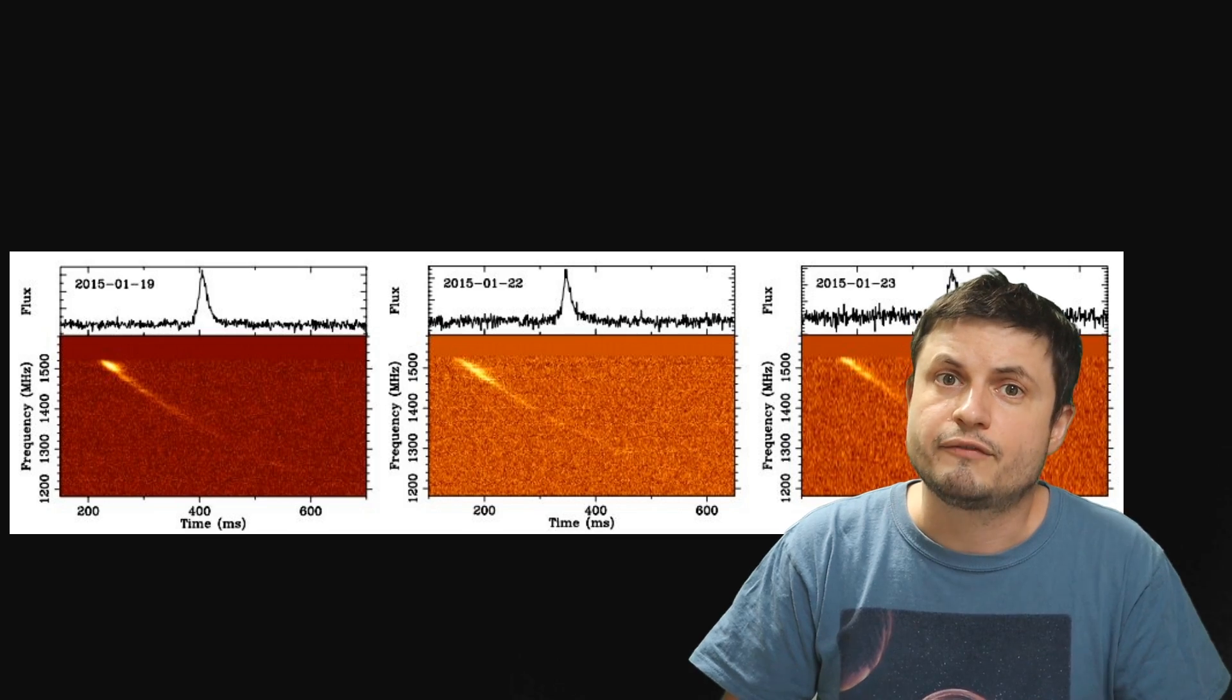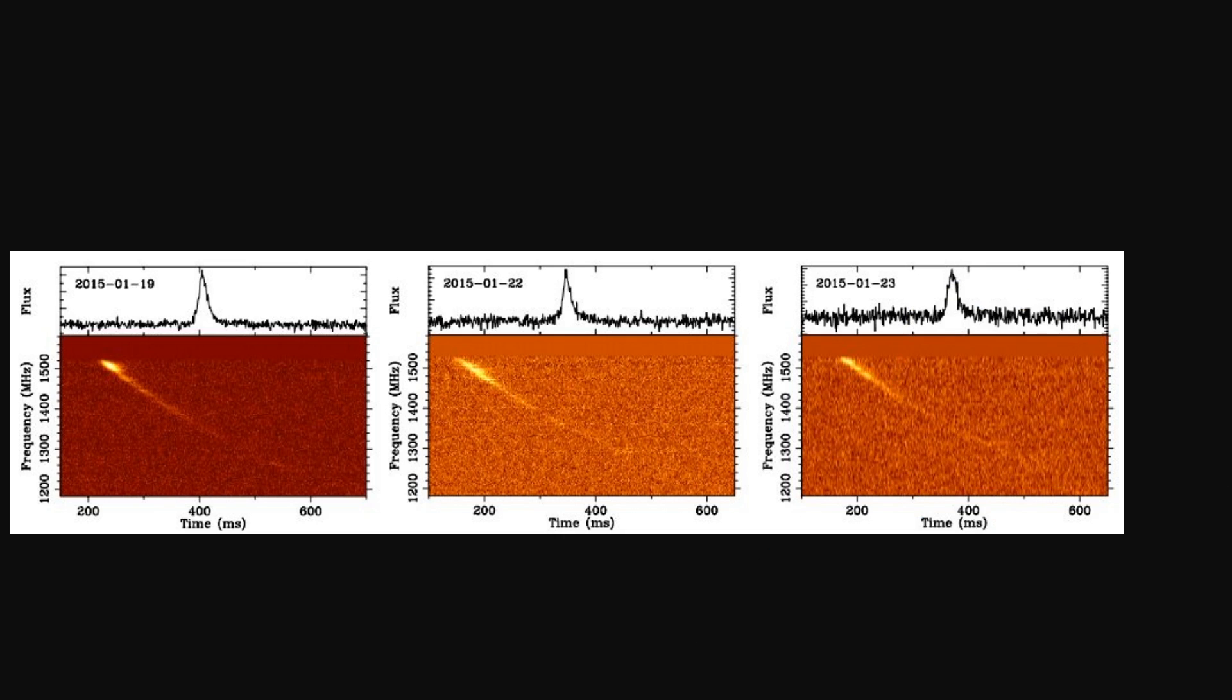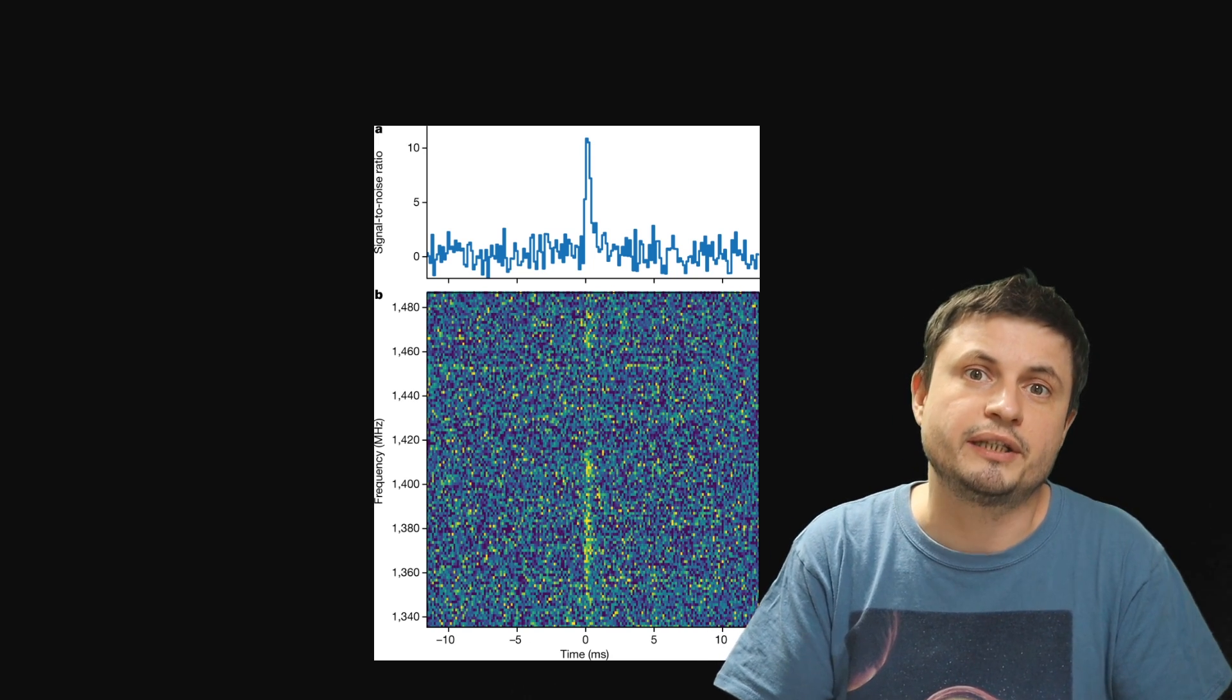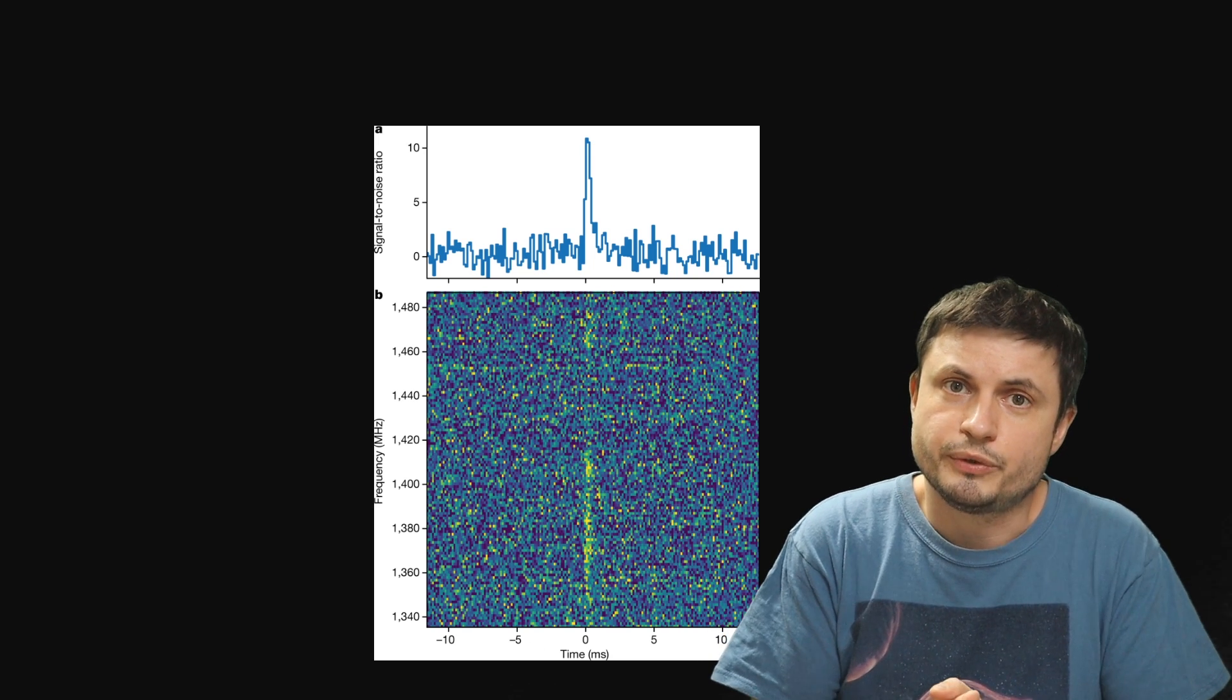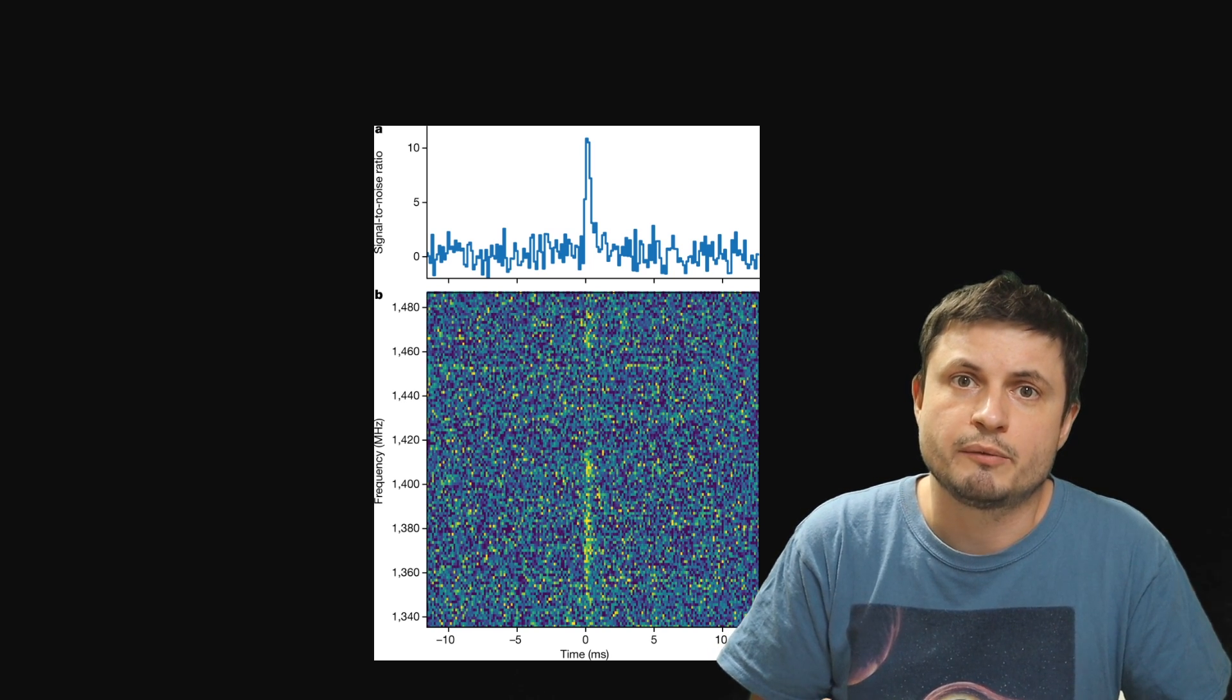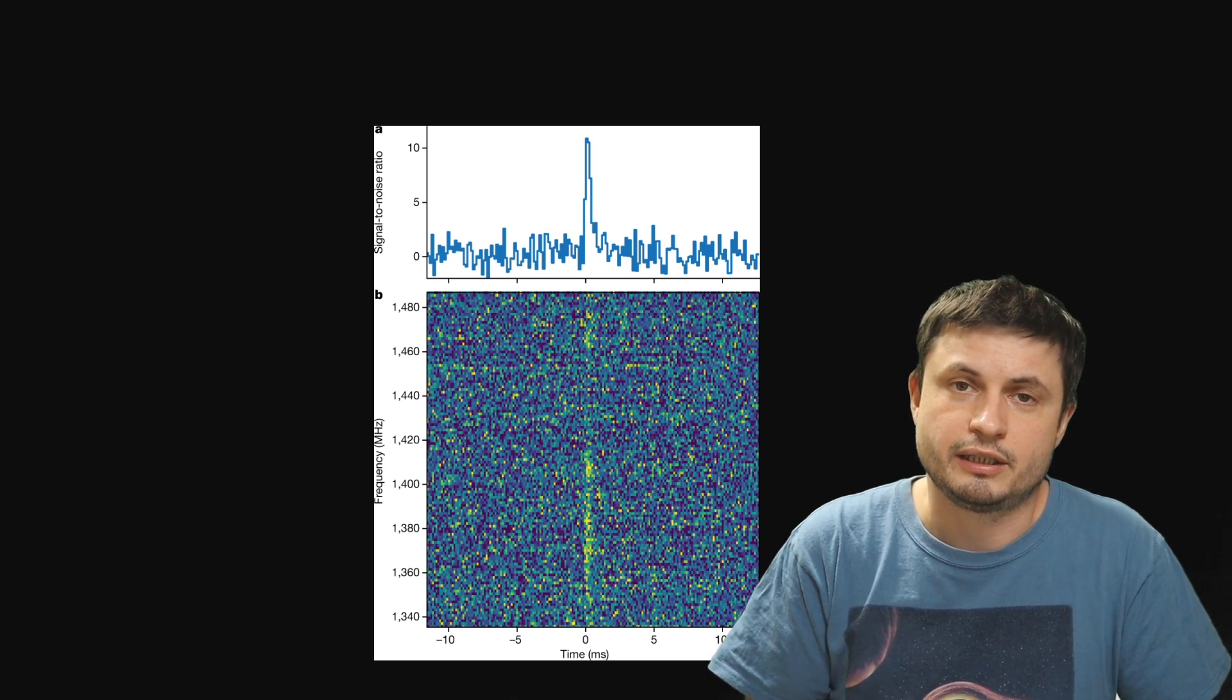They were these radio bursts in the data that no other observatory was actually witnessing. If you were to look at these bursts out of Parkes Observatory they would look something like this. Now this surprisingly looks extremely similar to a typical FRB that we know today.